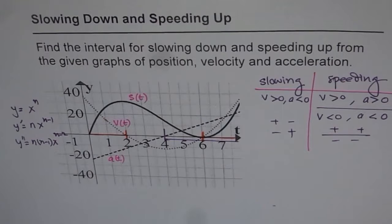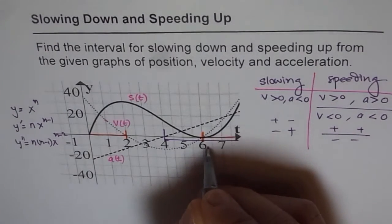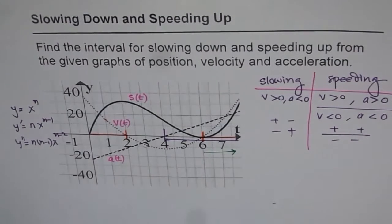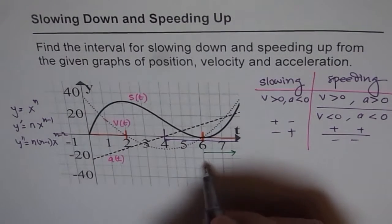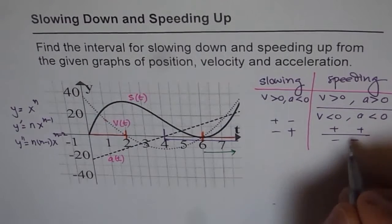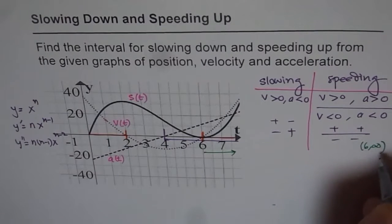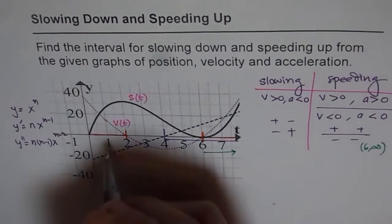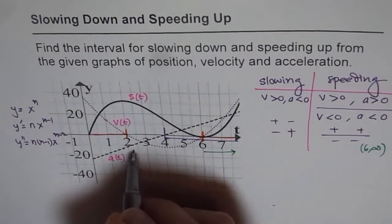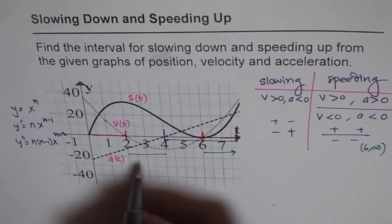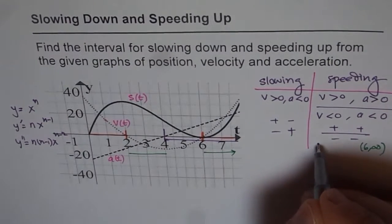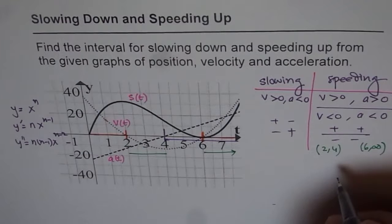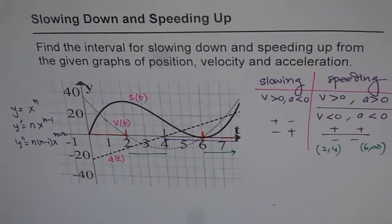The common points where both are positive give you speeding up. Both velocity and acceleration are positive from 6 onwards — so that is speeding up from 6 to infinity. Both are also negative between 2 and 4, so it is also speeding up from 2 to 4 because they have the same signs. That is how you figure out which portions are speeding up.